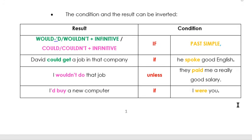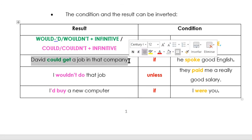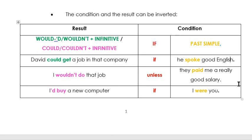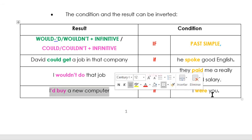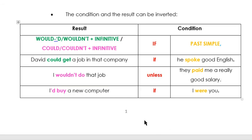As in the zero and first conditional, we can find the condition and the result inverted — puede estar todo invertido, puede estar al principio el resultado y luego la condición. For example: David could get a job in that company if he spoke good English. I wouldn't do that job unless they paid me a really good salary. I'd buy a new computer if I were you. Todo invertido y utilizamos siempre la misma conjugación de los verbos.